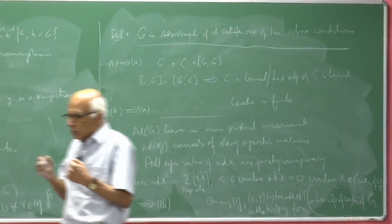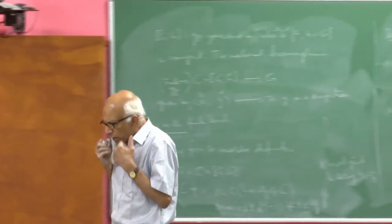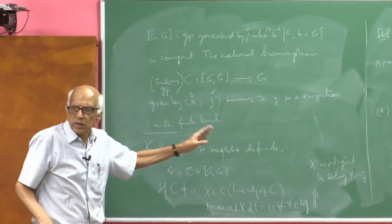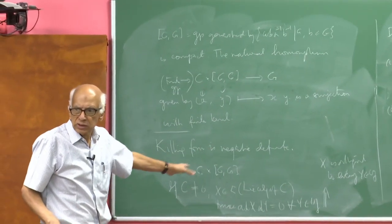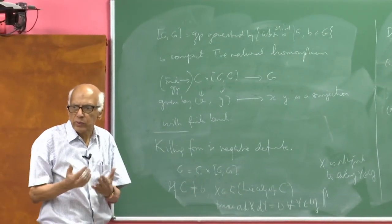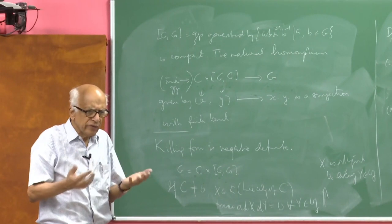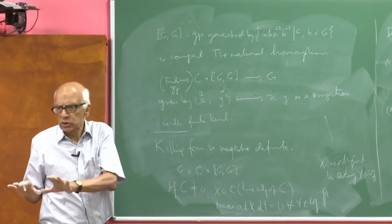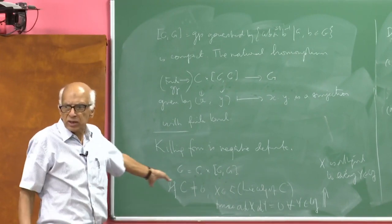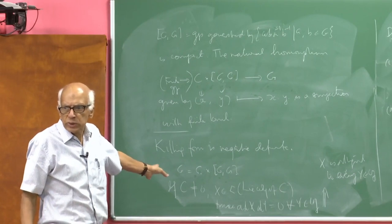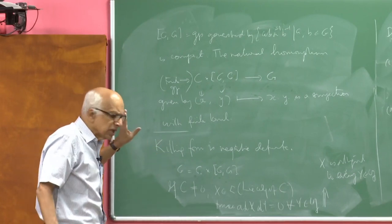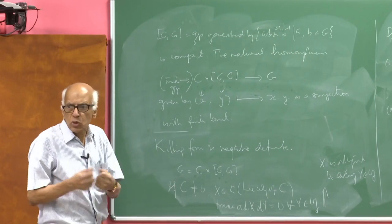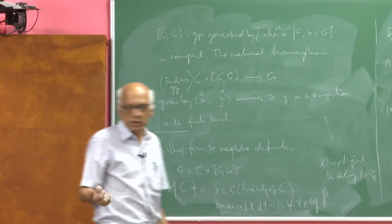We will soon transform problems about the group into problems about the Lie algebra, and the fact that the Killing form is negative definite is going to play a crucial role later.